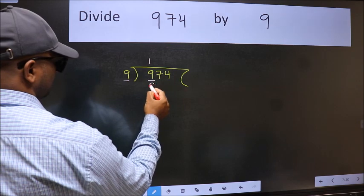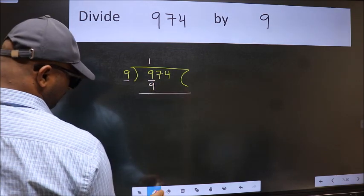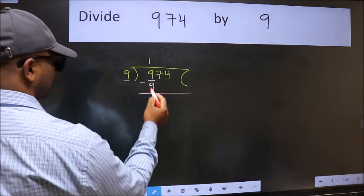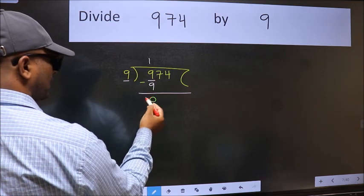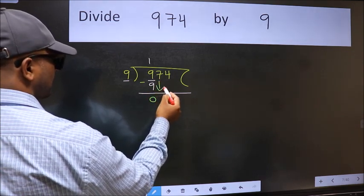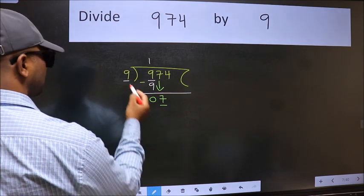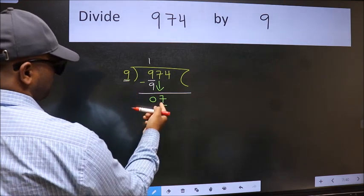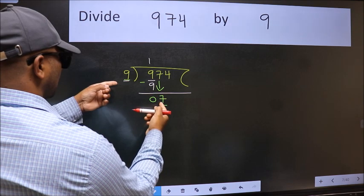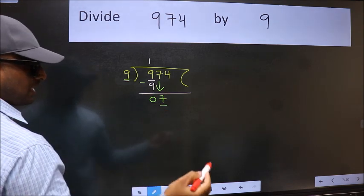Now we should subtract. We get zero. After this, bring down the beside number, so seven down. Now here we have seven and here nine. Seven is smaller than nine, so we should bring down the second number.